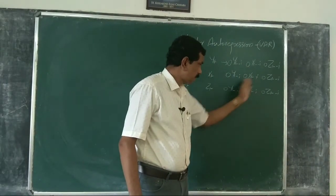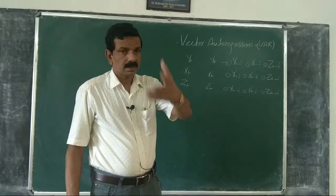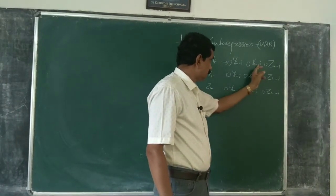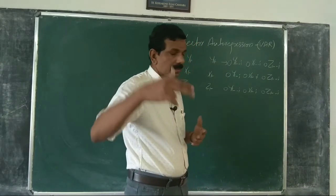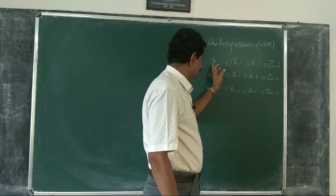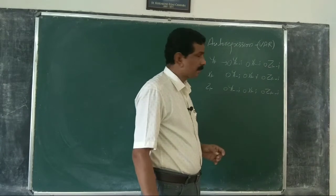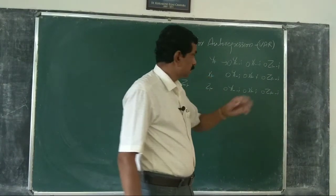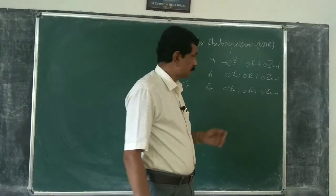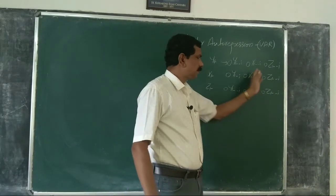Similarly in the second and third equations. If your interest is Granger causality only, and if you want to know whether xt Granger causes yt, as I told you in the last class, you regress yt on yt minus 1, zt minus 1 only — that is the restricted form — then yt on all these terms for the unrestricted form. Then formulate the F-statistic using restricted and unrestricted RSS.